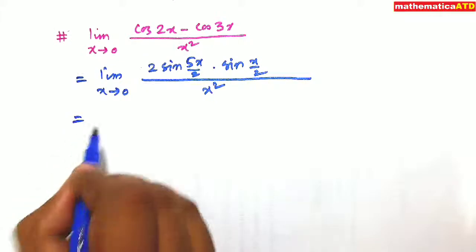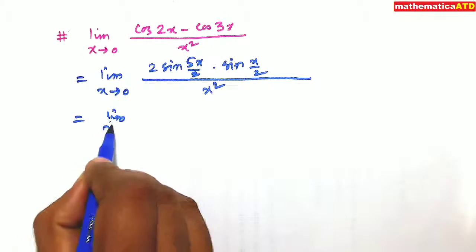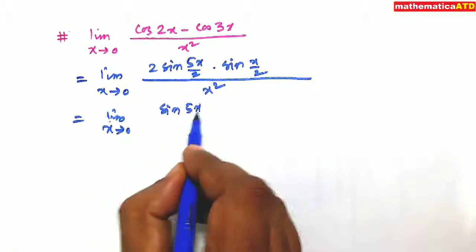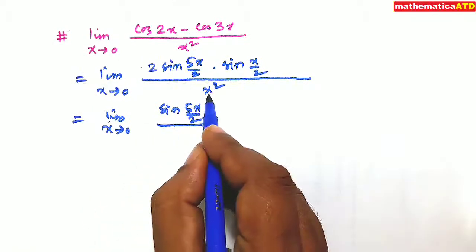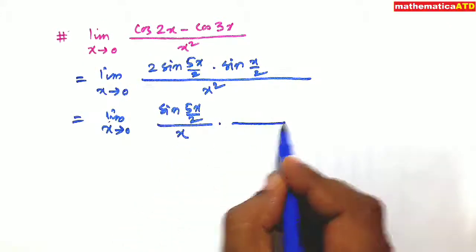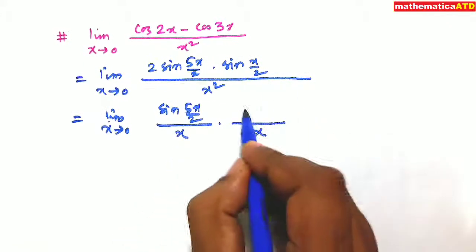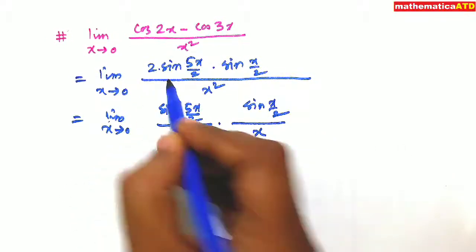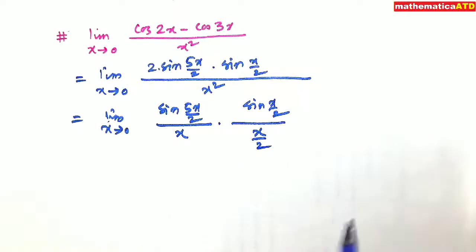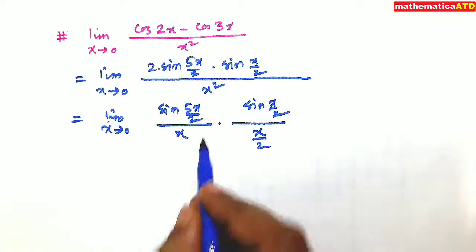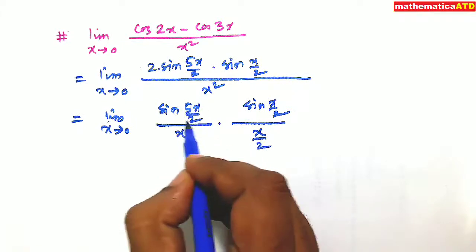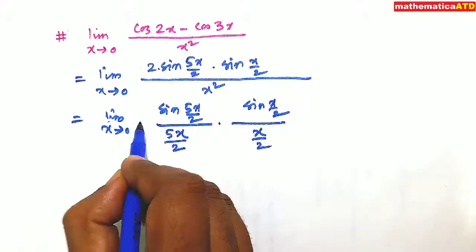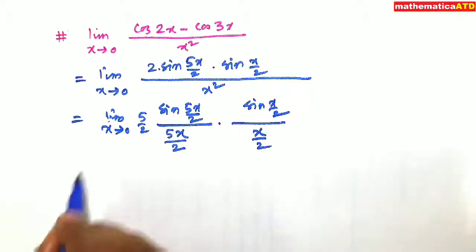This is limit x tends to 0 and sin of 5x upon 2 divided by x square. I split it x into x and this is sin of x upon 2. 2 is multiplied here, so I take it in the denominator x upon 2. Now, sin of 5x upon 2, this is the angle of sin. So I make it 5x upon 2. You have to multiply by again 5 upon 2.